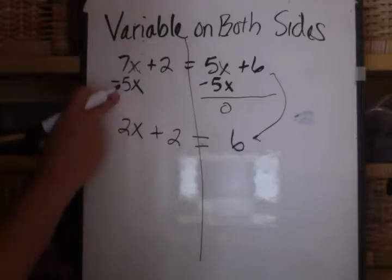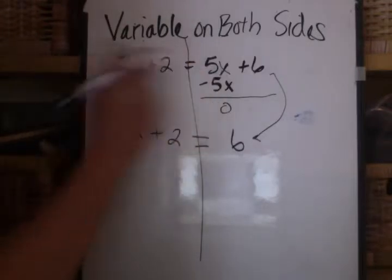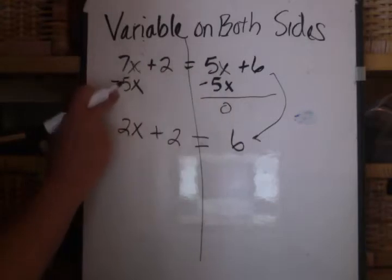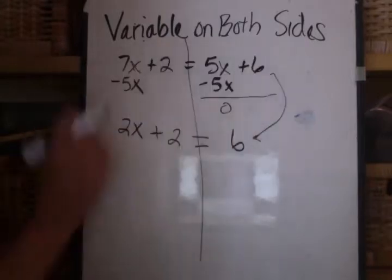Again, what I did was subtracted 5x. I took the smaller value, 5, and subtracted that from both sides. And then 7x minus 5x is 2x. Everything else just came down.